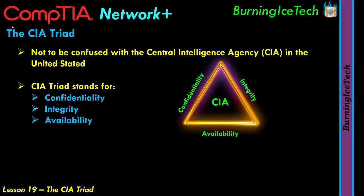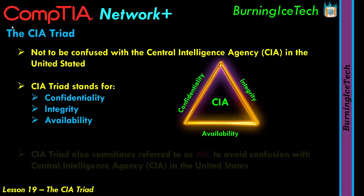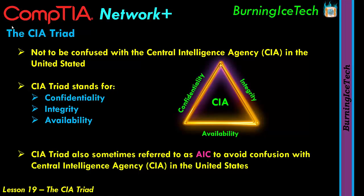So there you have it: confidentiality, integrity, and availability. The CIA in IT is often confused with the CIA in the United States, so to help with that, the CIA in IT is often referred to as AIC instead — basically the same letters, just backwards. So now we know what the CIA abbreviation in IT stands for, but what does it actually do?